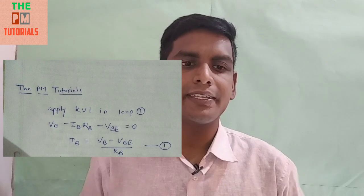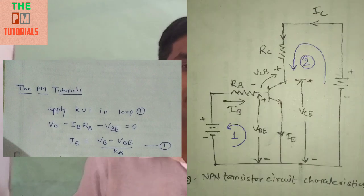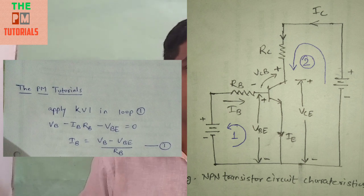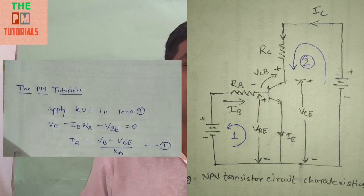So we apply KVL in loop 1. We can find out here: VB minus IB*RB minus VBE is equal to 0. So from this equation we can derive the value of base current: IB is equal to VB minus VBE upon RB. We have given this equation 1.